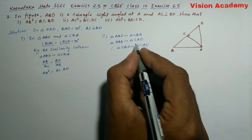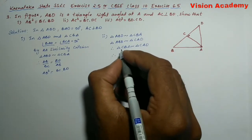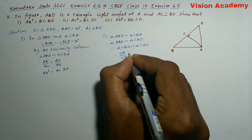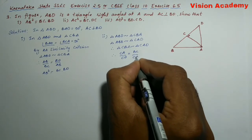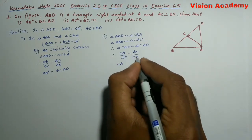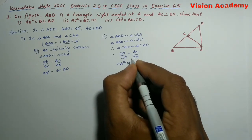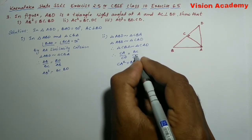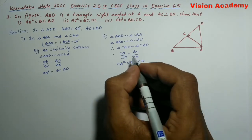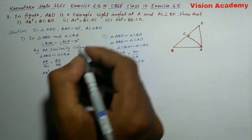Once the two triangles are similar, then their corresponding sides are in proportion. We will write CA by CD is equal to BC by CA. When we cross multiply, we are going to get CA square is equal to BC into CD. Hence the proof of the second problem. Let us move on to the third one.